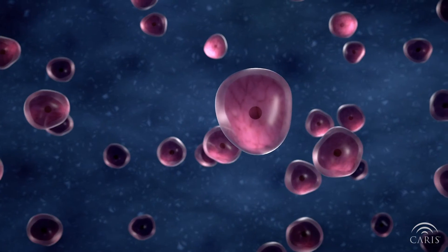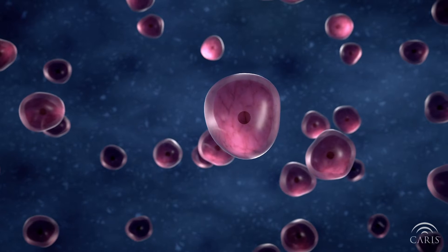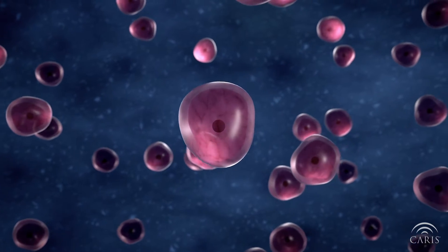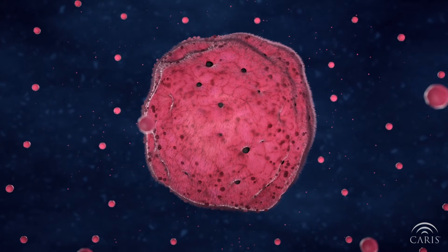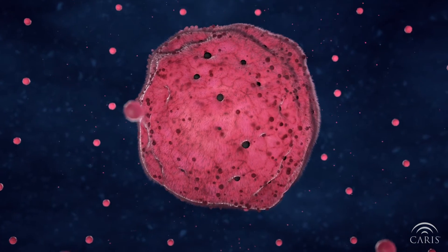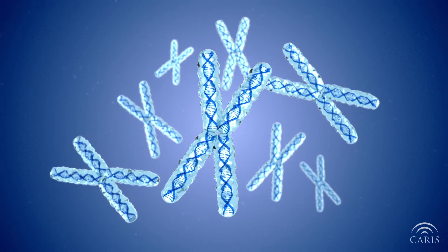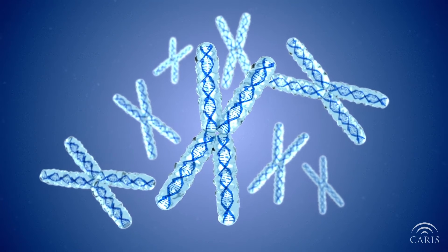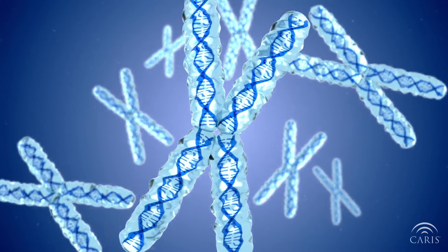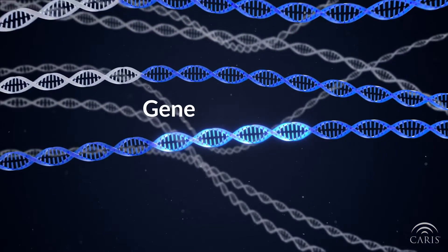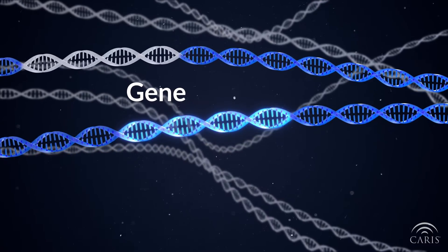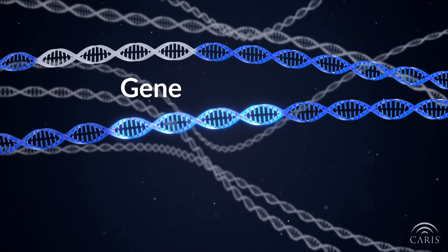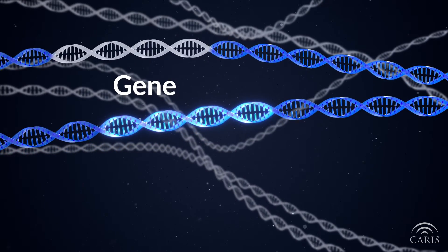The human body is made up of trillions of individual cells. Each cell contains the complete DNA code needed to make every part of the human body. Genes are long strands of DNA that give each person their individual characteristics.